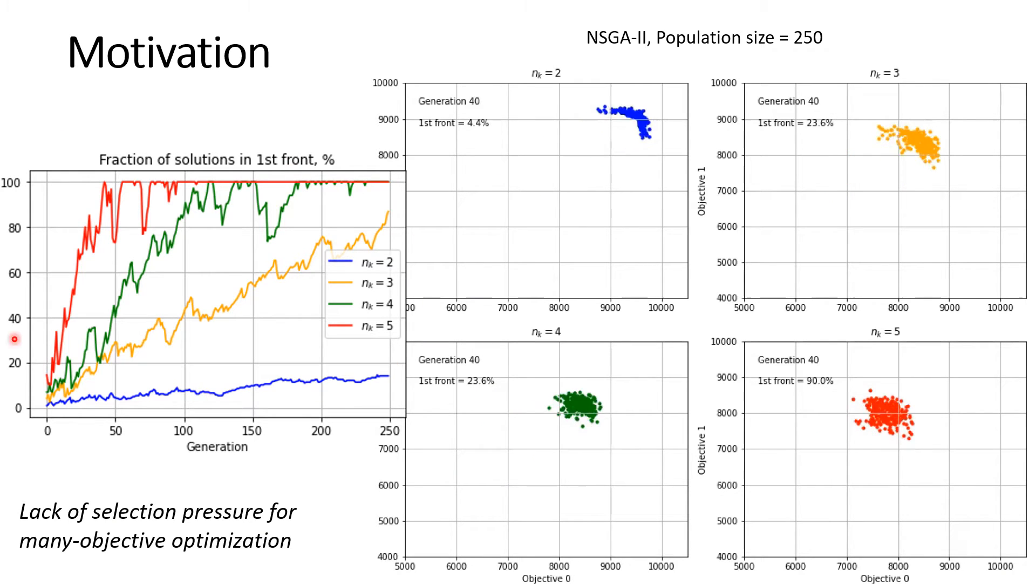The figure on the left demonstrates the fraction of solutions belonging to the first front for 0-1 knapsack problems with different number of objectives ranging from 2 to 5. As we can see, this number increases rapidly with the number of objectives. For five knapsacks, after 100 generations almost all solutions belong to the first front, indicating that they are all incomparable or equally preferable. This is known as the lack of selection pressure that doesn't allow the genetic algorithm to further advance the evolution.